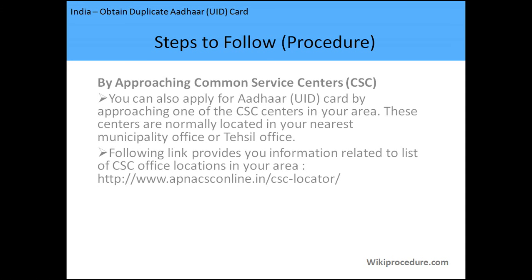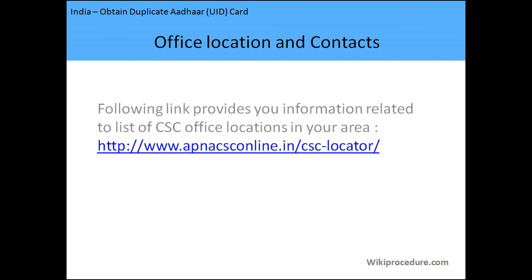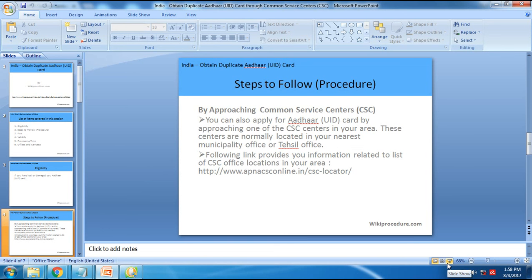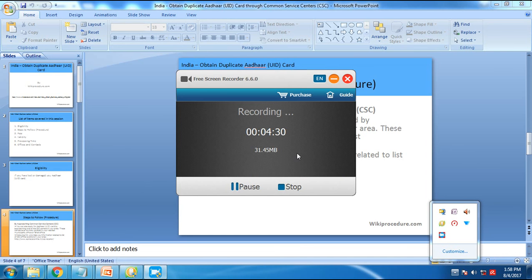Regarding fees, I'm not fully sure, but it should normally be free — you can confirm this with the person at the center using the contact information from the page shown earlier. Validity is lifetime. For office locations, as shown, use the locator link. One practical tip: take a pen with you, as it always helps to update information on the application form or to fill a new one.